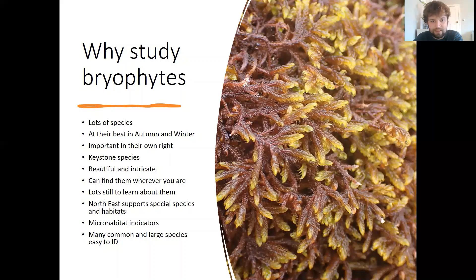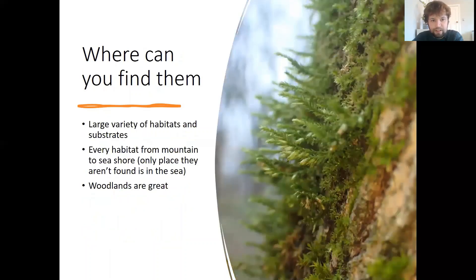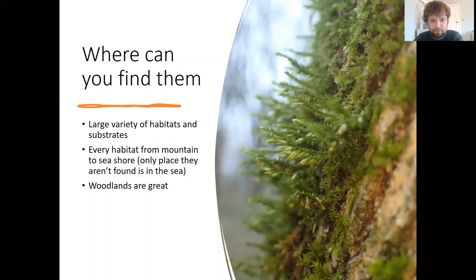The northeast supports some really special species and habitats. Although there's a huge diversity of species, many of the common and large species are easy to identify in the field and these are the ones we'd focus on in the course. You can find bryophytes wherever you are — they occur on a large variety of habitats and substrates, and many bryophytes are substrate specific, so you only find them growing on living trees and similar surfaces. They can be found in every habitat from the mountain tops right down to the seashore; the only place where you don't find bryophytes is in the sea itself. Woodlands are a really great place to start looking — you can find them on the woodland floor, growing up trees, on deadwood, on rocks and in streams. Due to the humidity, the bryophytes found there are often larger than in other areas, which means they're easier to spot and get to grips with.